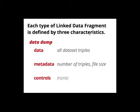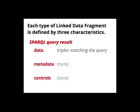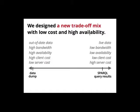A data dump as a linked data fragments interface consists of just one big fragment containing all dataset triples as data. Sometimes there's also metadata like the number of triples or file size, and there are typically no controls to other data — because you already have everything. For a SPARQL endpoint, each response you get back is also a fragment — a very specific fragment containing as data all those triples that exactly match the query you gave. There's no metadata, no controls, because you didn't ask for them.